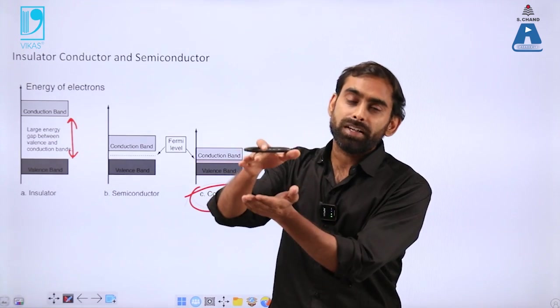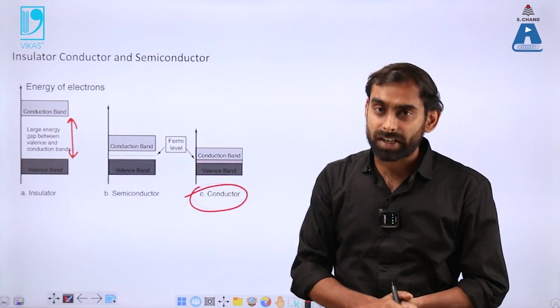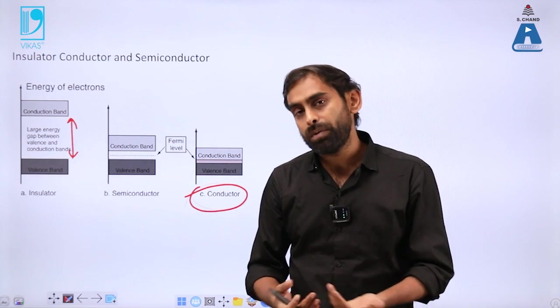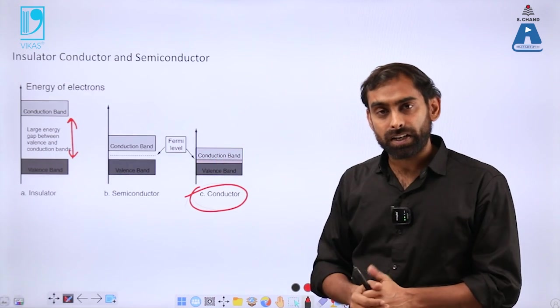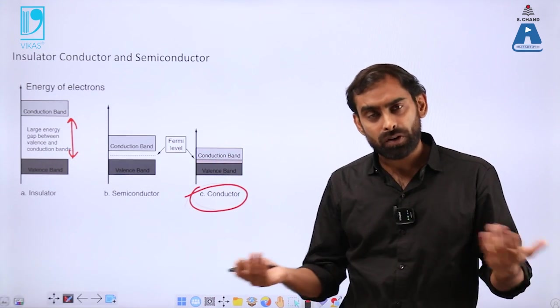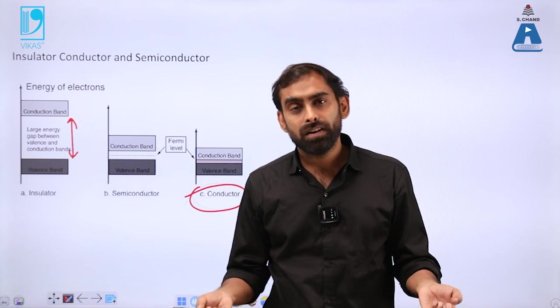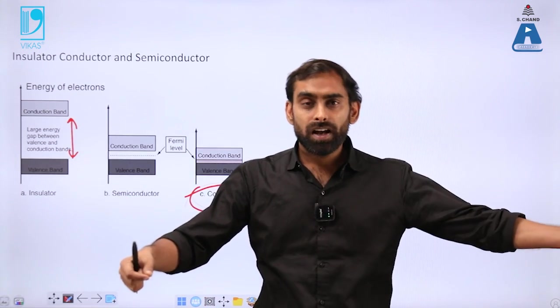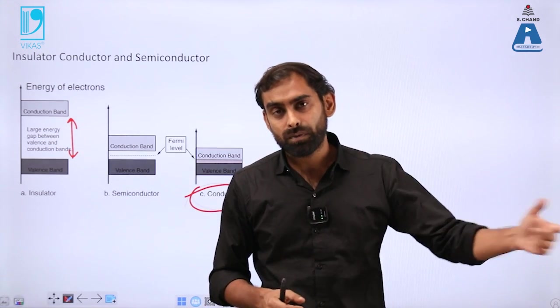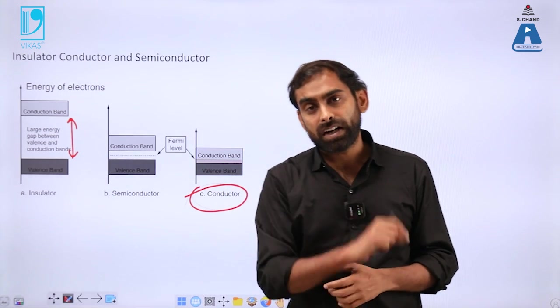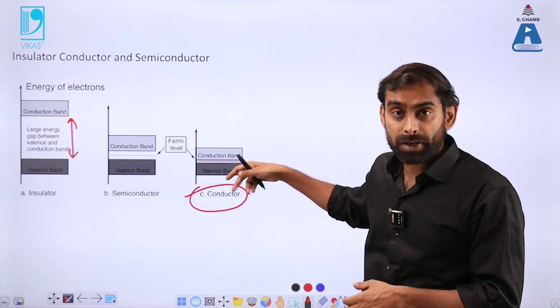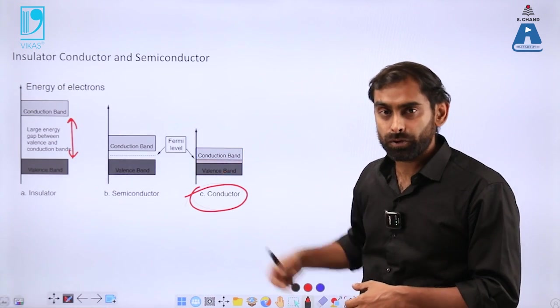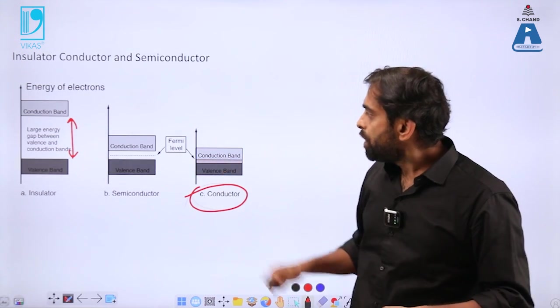Two bands exist, and even at room temperature, electrons are present both in valence band and conduction band. You don't have to apply any energy to make that material conduct electricity because free electrons are already present. Metals have overlapping conduction and valence bands, making them good conductors.